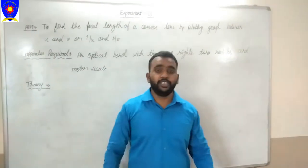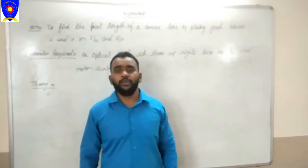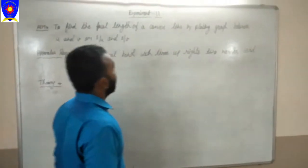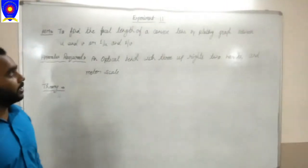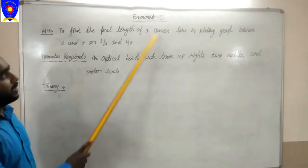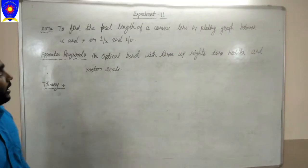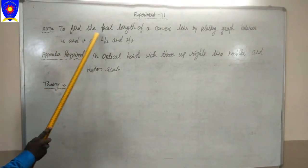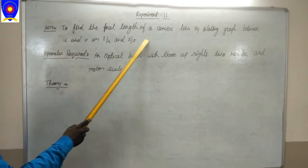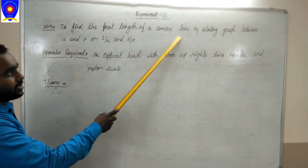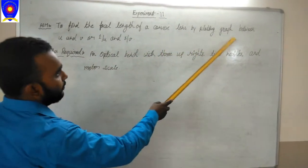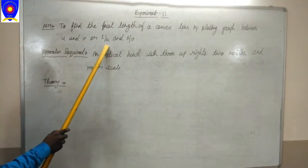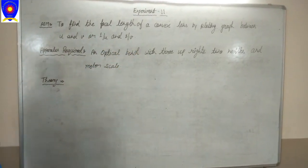I am Doro Williams, from the campaign school. Today we have to perform experiment number 11 and the aim of the practical is to find the focal length of a given lens by plotting a graph between U and V, or 1 upon U and 1 upon V.